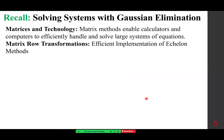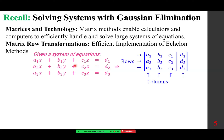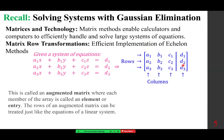Solving systems with Gaussian elimination using matrices and technology: matrix methods enable calculators and computers to efficiently handle and solve large systems of equations. Given a system of equations A₁X plus B₁Y plus C₁Z equals D₁, and the second and third equations, we can write the augmented matrix with rows A₁, B₁, C₁, D₁. The rows correspond to the equations, the columns correspond to X, Y, Z, and the constant. This is called an augmented matrix, where each member of the array is called an element or entry.